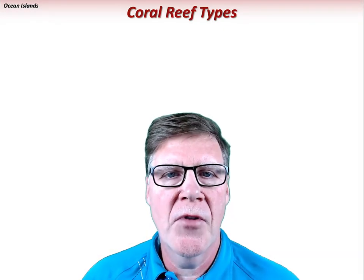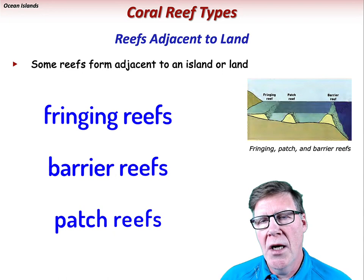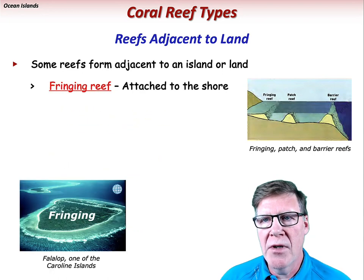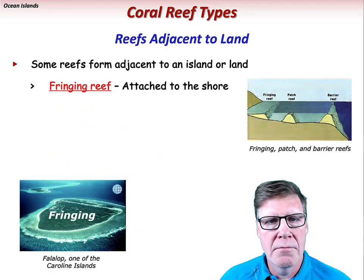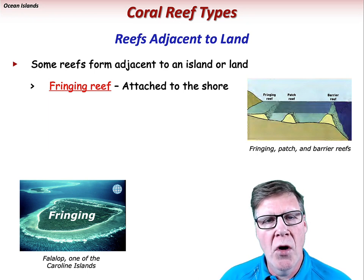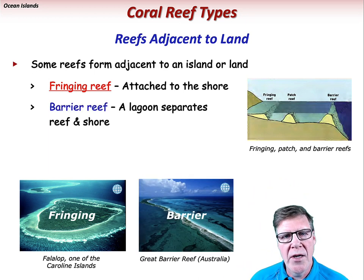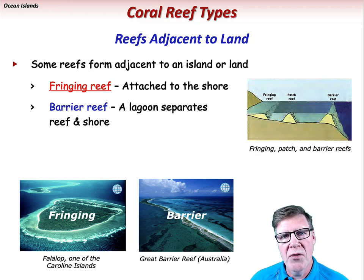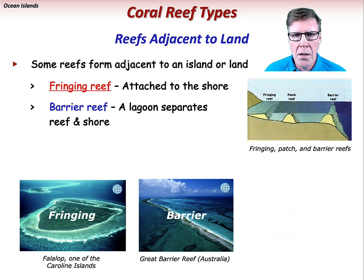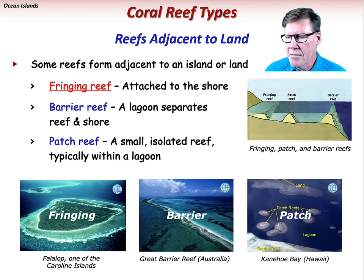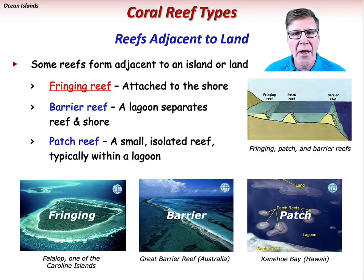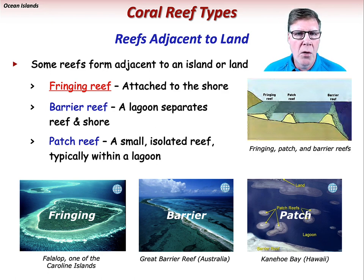There are a few different types of coral reefs. A fringing reef is attached to the shoreline. Fringing reefs are present in many of the small islands in the Yap Island group of the Caroline Islands. Barrier reefs are separated from the shoreline by a lagoon — the Great Barrier Reef is of course the most famous of this type. Patch reefs are small, isolated reefs, typically with a lagoon. There are 79 patch reefs in Kaneohe Bay, Oahu, that range up to 850 meters in diameter, with an average depth of about 1 meter.